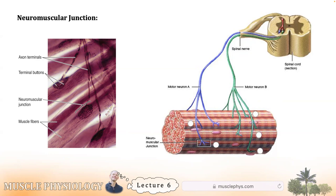In most muscles — unless you're thinking about laryngeal muscles — there's only one neuromuscular junction per fiber, and it joins that fiber approximately in the longitudinal middle, so the action potential can spread in an even way from the center outward.